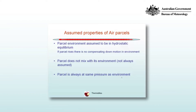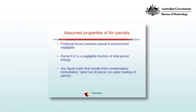The parcel is always at the same pressure as its environment. We ignore frictional forces between the parcel and the environment, so if it's going to rise, there's nothing slowing it down. The parcel's kinetic energy is a negligible fraction of the total parcel energy — things like the heat it contains and its height, the potential energy, are more significant. We also assume that any liquid water resulting from condensation immediately rains out of the parcel, so there's no water loading of the parcel.